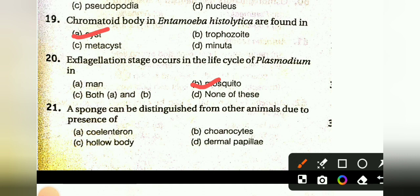Sponges can be distinguished from other animals due to the absence of: ciliateron, choanocytes, hollow body, or dermal papilla. The answer is B, choanocytes.